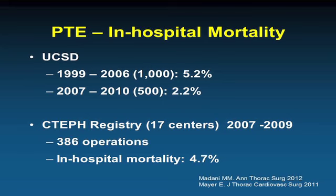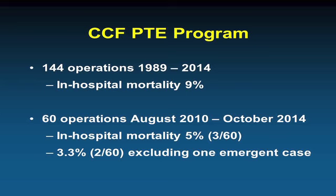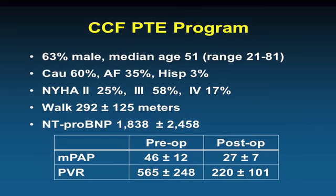UCSD were the pioneers of this surgery, and mortality has improved over time — down to 2% at UCSD and approximately 4.7 to 5% in Europe. At our institution, we have a program running for four years, having performed 60 operations at an average of about 15 per year, growing to 20 this year, with 5% mortality overall and 3% excluding one emergent case. Our patients include some functioning at WHO class 4, most at class 3, with poor six-minute walk distances and elevated NT-proBNP. Operations successfully normalize pulmonary pressures and pulmonary vascular resistance.